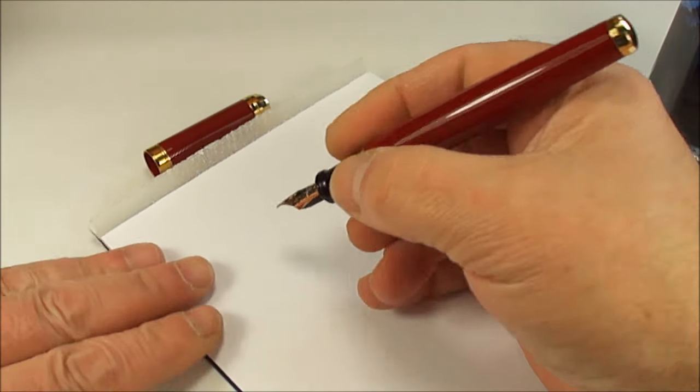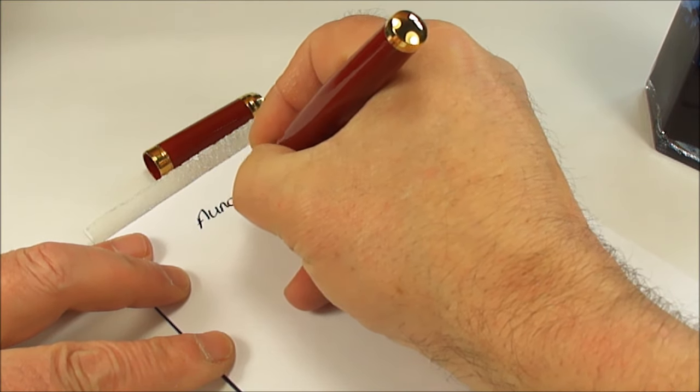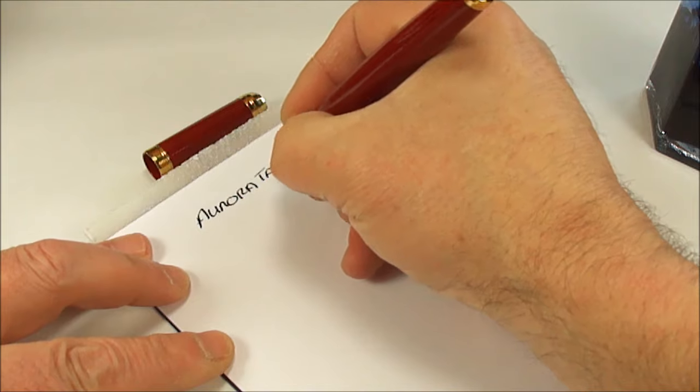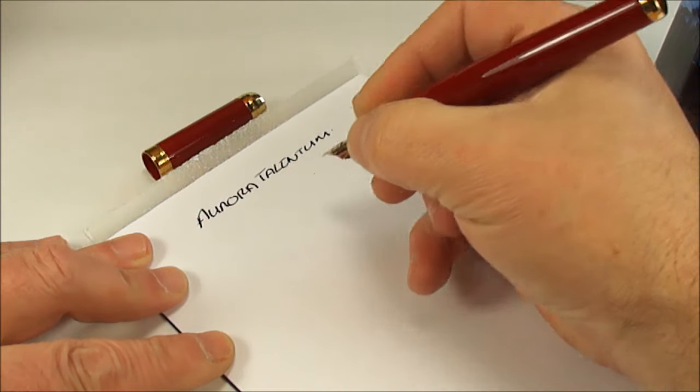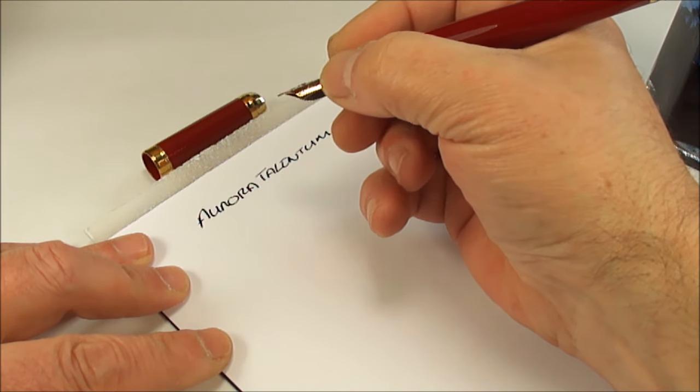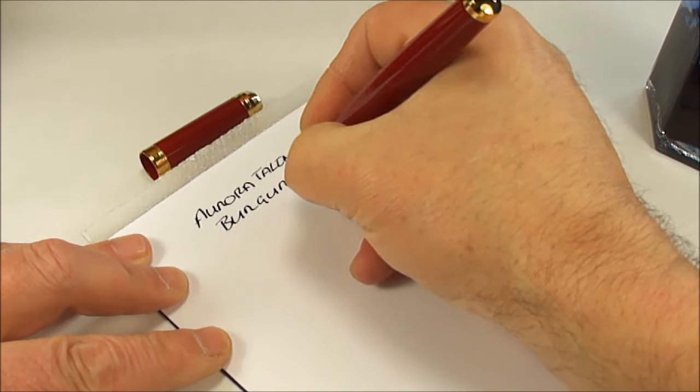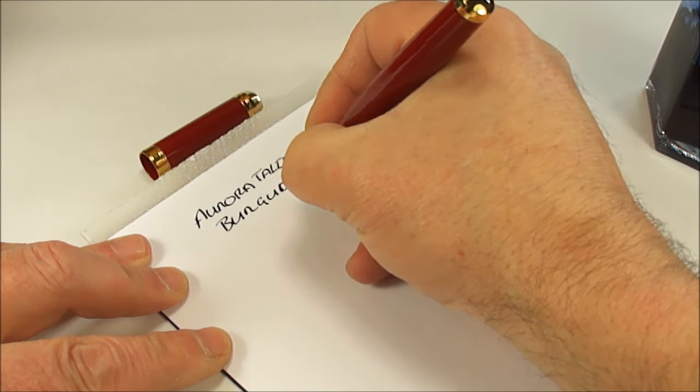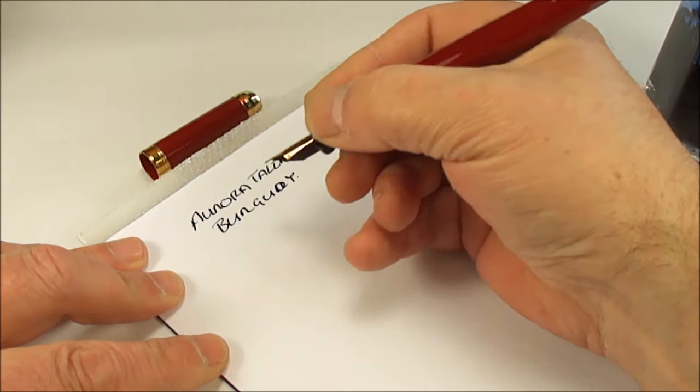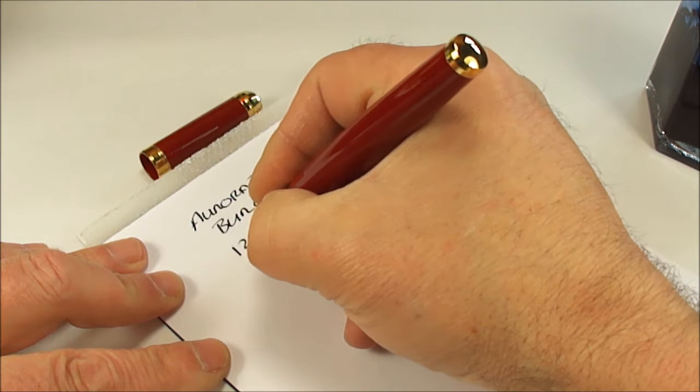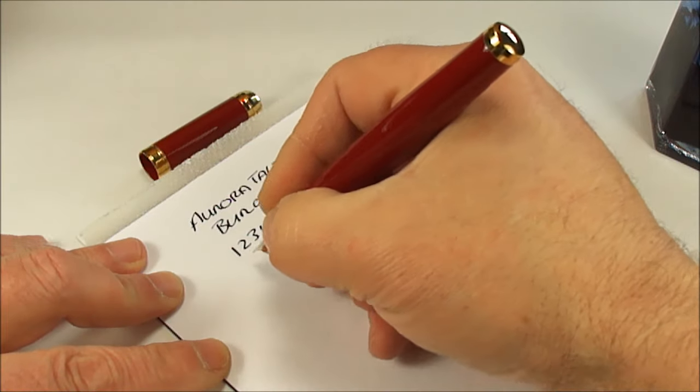As we said, what we have here is an Aurora and the model of this particular one is the Talentum. Very nice writer. The color of this one is burgundy, or as some people have said on this model it's a Bordeaux color. All in all, very nice writer as you would expect from this quality fountain pen.